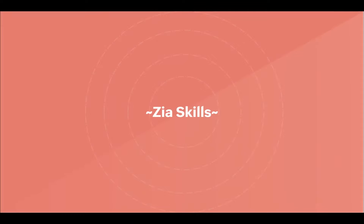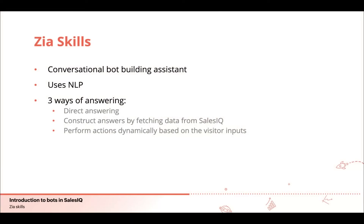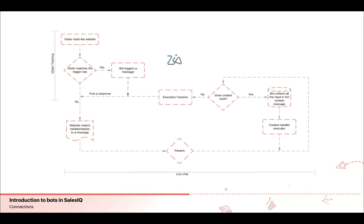The next platform is Zia Skills. Zia is a conversational bot building assistant. The Zia Skills platform uses natural language understanding to process and perform defined skills and actions to respond to visitor queries. With Zia's developer console, you can define a unique set of actions depending upon your requirements — directly answering a question, constructing an answer by fetching data from SalesIQ, or performing operations dynamically based on the visitor.